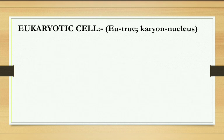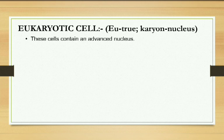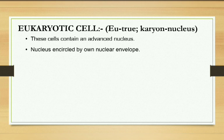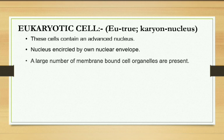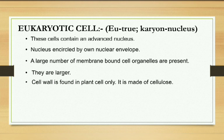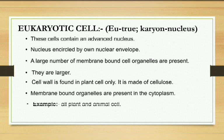Eukaryotic cell — 'eu' means true, so it carries a true nucleus. In eukaryotic cells, the nucleus is well-developed because it is enclosed or covered by a nuclear membrane. A large number of membrane-bound organelles are present. They are larger in size. Cell wall is present only in plant cells, not in animal cells, and in plant cells the cell wall is made up of cellulose. Examples are all plant and animal cells.